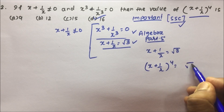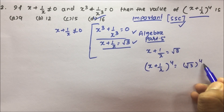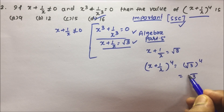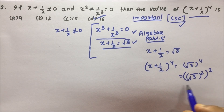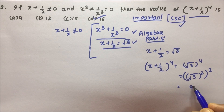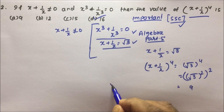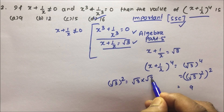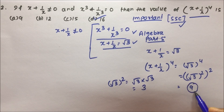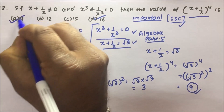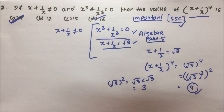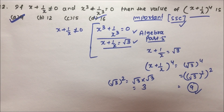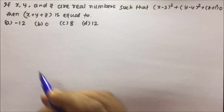We need to calculate (x + 1/x)⁴, which equals (√3)⁴. We can write this as (√3)² whole squared. Now (√3)² = 3, and 3² = 9. So (√3)⁴ = 9. Option A is the correct answer for question number 2, and this is how you solve this kind of problem very easily in the exam.